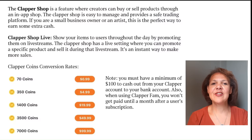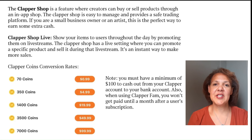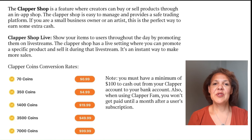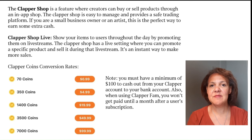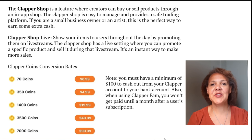In order to understand how Clapper coins work, here's a chart provided by Clapper with the current conversion rates: 70 coins is about 99 cents, up to 7,000 coins being worth approximately $99.99 US. Please note that when you're earning Clapper coins, you need at least $100 worth of Clapper coins in order to cash out and transfer that money to your bank account, PayPal, Venmo, or some other payment method. If you're using the fam tiers subscription service, you get paid after the month is completed to ensure the payment is successful.